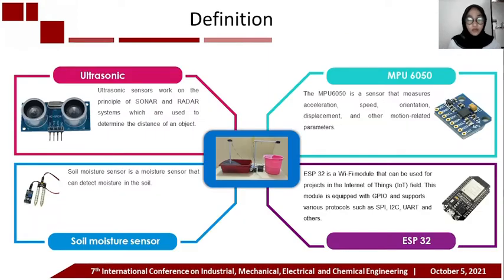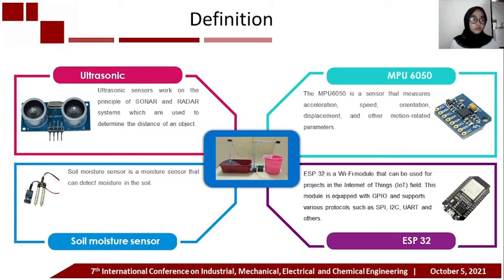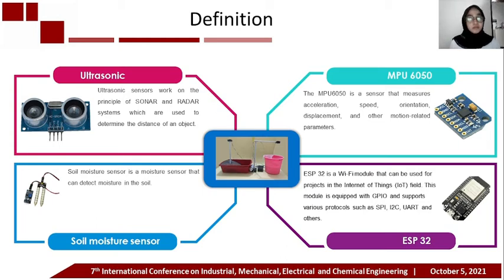The hardware and software I used at the time of the research. First, the ultrasonic sensor works on the principle of the sonar and radar system, which is used to determine the distance of an object. Next, the MPU sensor is a sensor that measures acceleration, speed, orientation, displacement, and other motion-related parameters.